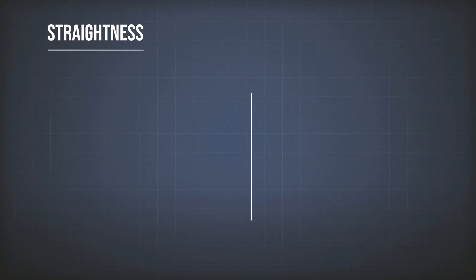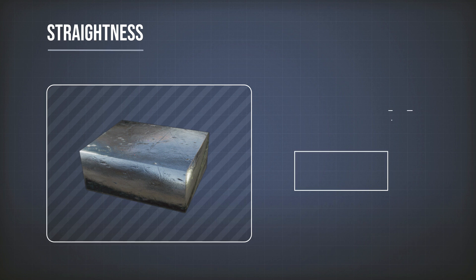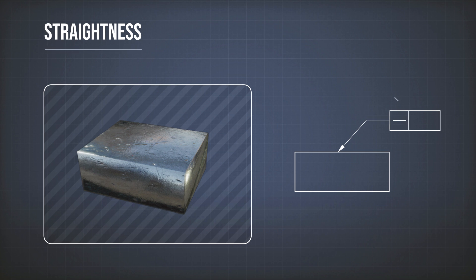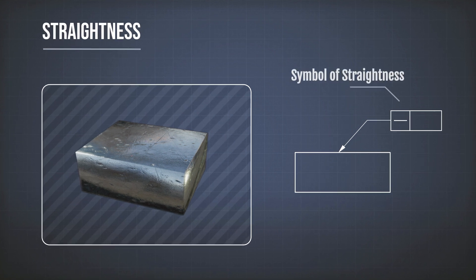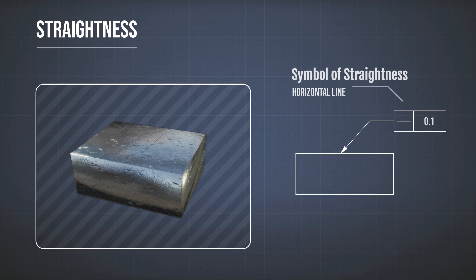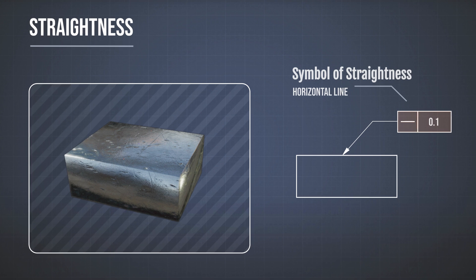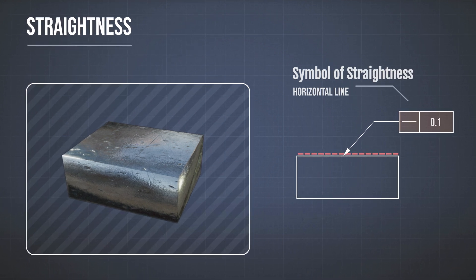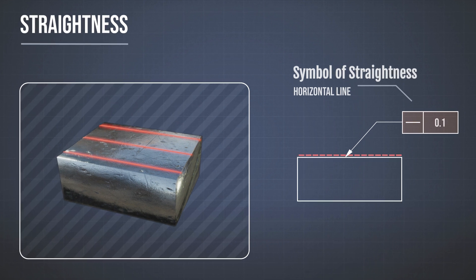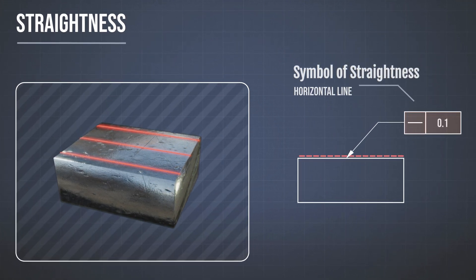Straightness is quite simple. If I have a part like this one, and here is one of the views. If I put a tolerance here using my leader and feature control frame, and then I put the symbol of straightness here, which is just the horizontal line, it has to be 0.1. So the straightness of this feature has to be 0.1. We pointed at this line here, which means it's a line on this surface. And not only one line, but any line on that surface that's parallel to the line pointed at by the leader has to fulfill this tolerance requirement.